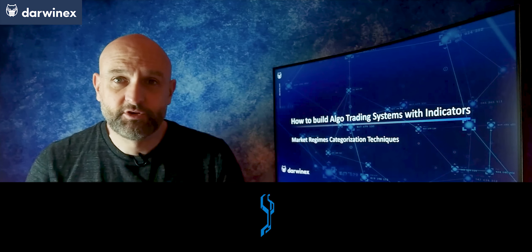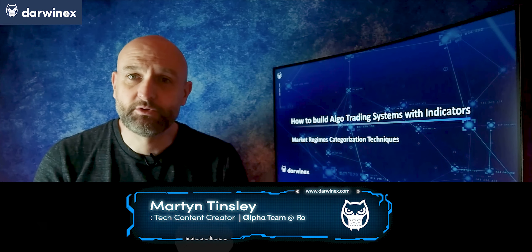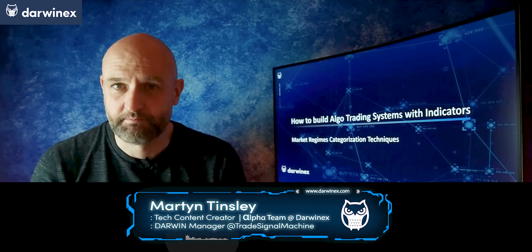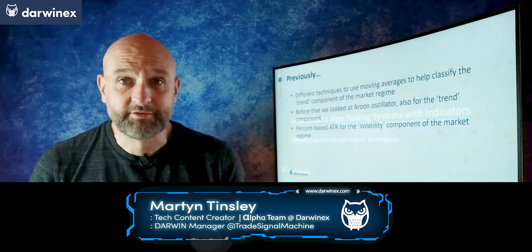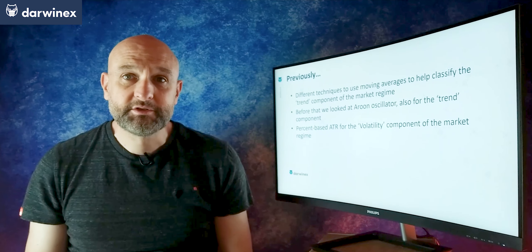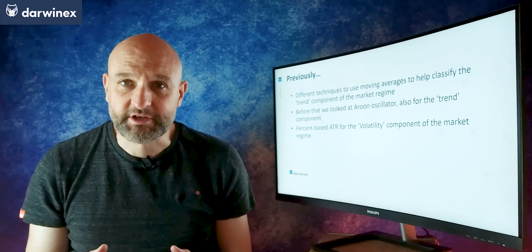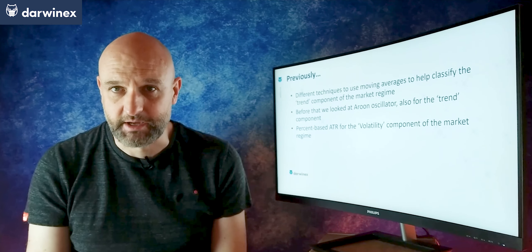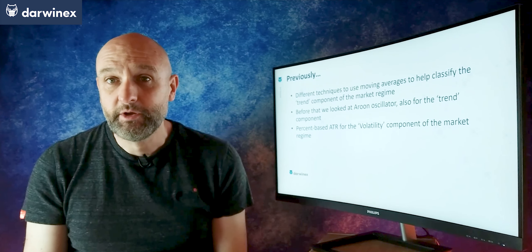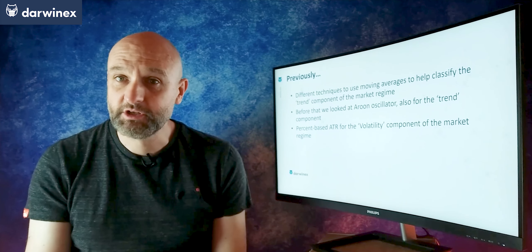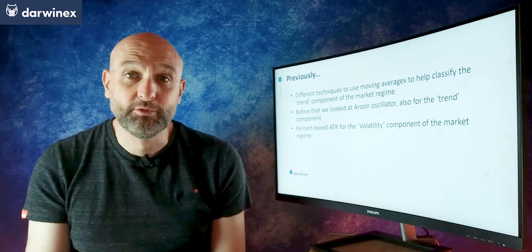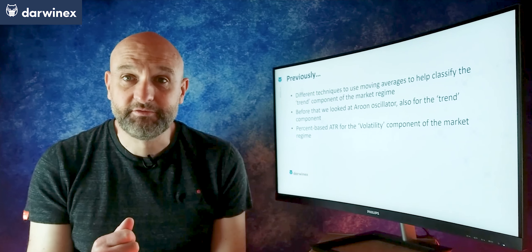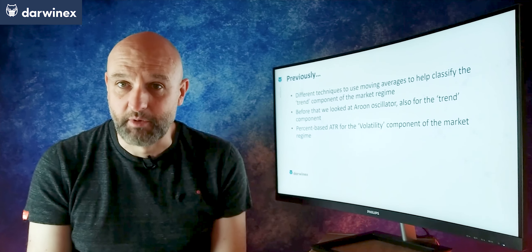This episode is all about looking at better techniques to classify the market regime. This follows on nicely from what we've learned previously, where we looked at how to use moving averages in order to classify the trend component of market regime. Before that, we also looked at using an oscillator called Aroon to do the same, and also using the percent-based average true range to classify the volatility aspects of the market regime.